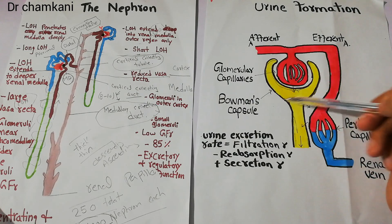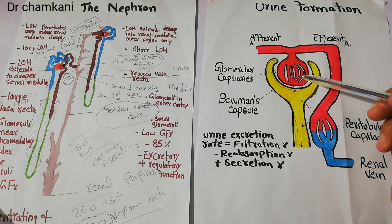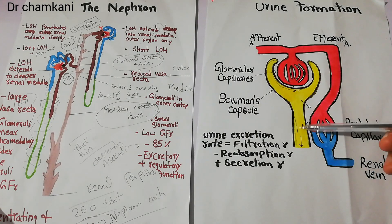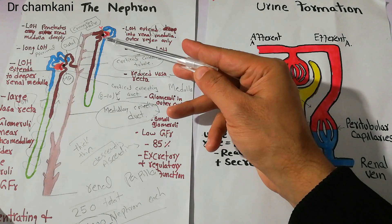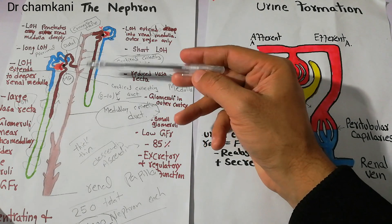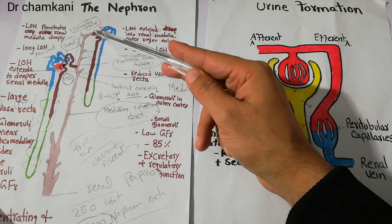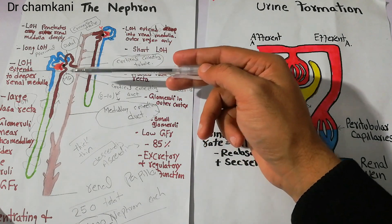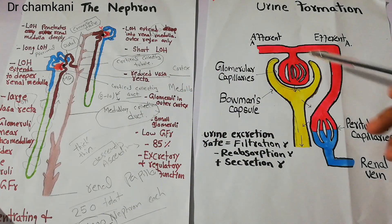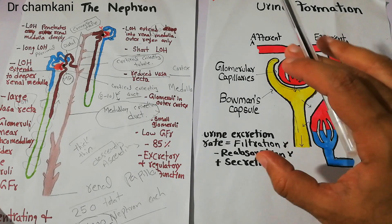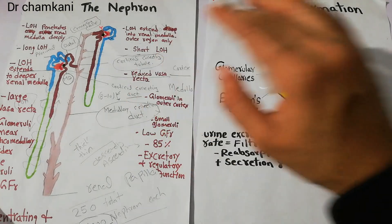Here we can see the whole tubule has different parts: the proximal tubule, the loop of Henle, the distal tubule, and then the collecting ducts. But in this diagram we have simplified and summarized the process quickly.